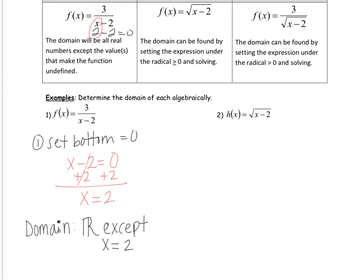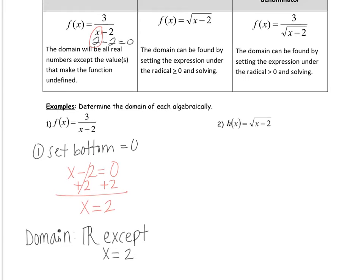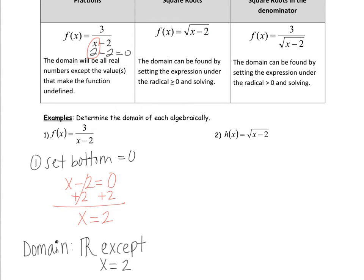The second example is an example with a radical. If we look at square root functions, what do we know we can't have? We can't have negatives under the radical. We can have 0 and we can have positive numbers. The square root of positive 25 is 5, the square root of 0 is 0, and the square root of negative 4 is 2i. But i's are something imaginary, something that doesn't exist, so radicals really can't have negatives under them.